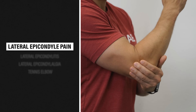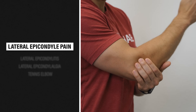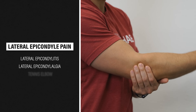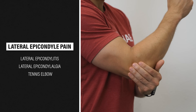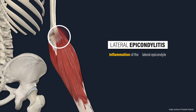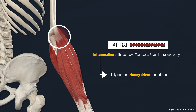There are a lot of names used to describe pain at the location of the lateral epicondyle: lateral epicondylitis, lateral epicondylalgia, tennis elbow, etc. This can be confusing. Lateral epicondylitis refers to inflammation of the lateral epicondyle, or more specifically, inflammation of the tendons that attach to the lateral epicondyle. However, lateral epicondylitis has fallen out of favor as a diagnosis because current research suggests that local inflammation is likely not the primary driver of the condition.